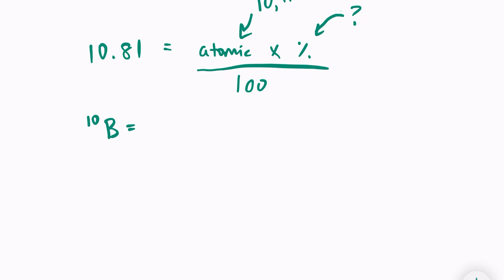I'm going to say that boron-10 is equal to x percent, because I don't know what that percentage is. And boron-11 is equal to 100 minus x. And I did 100 minus x because our percentages should equal up to 100 percent.